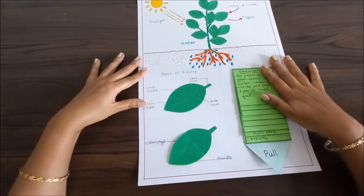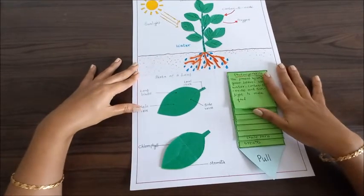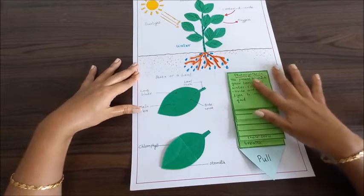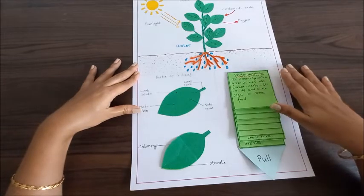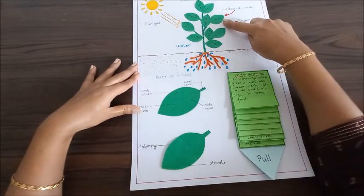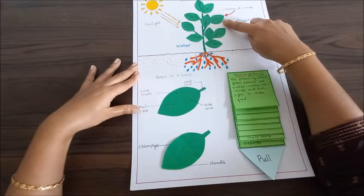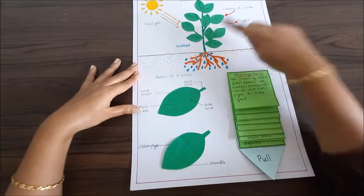First of all, what is photosynthesis? Photosynthesis is the process by which green leaves use water, carbon dioxide, and sunlight to make their food.